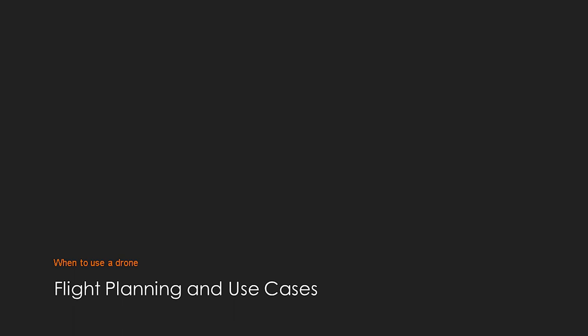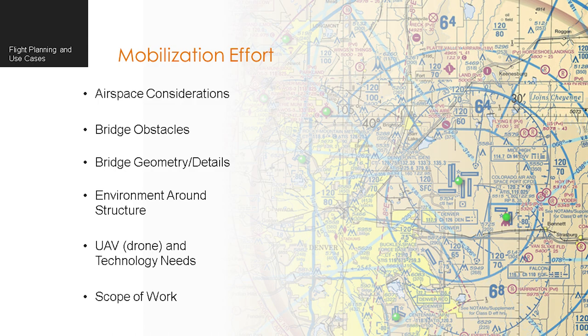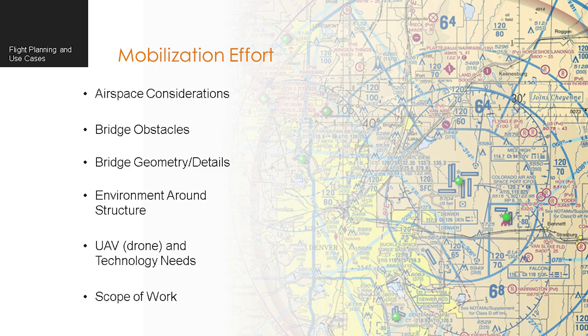So how are we mobilizing for these inspections? The first thing I always look for is airspace considerations — plotting that on the map and understanding where we're restricted from flying and where we might see obstacles because of other airports. Bridges themselves might also be an obstacle. Then we look at bridge geometry and where's the best use of these drones, the environment around the structure, and what UAV and technology we need to use.